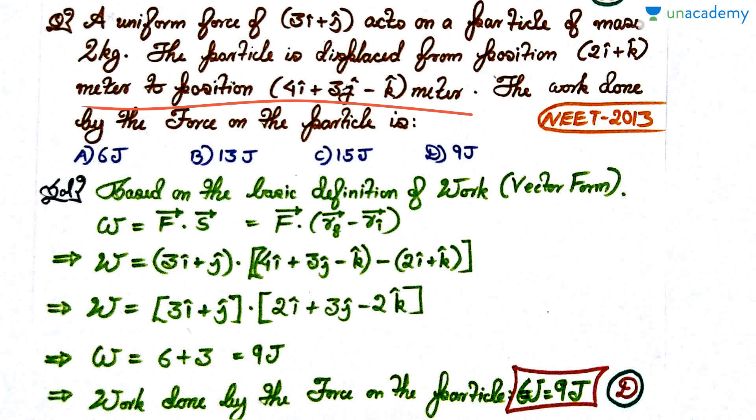It's very, very easy. It's simply based on the basic definition of work. The formula we use is vector form: W = F⃗ · S⃗. When force is constant, you can use this formula. The force is uniform, so you can use this definition. The displacement can be found as final position minus initial position. Both are given. When you substitute it and do the dot product, you will simply get 9 joules. Option B is the correct answer.